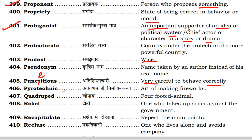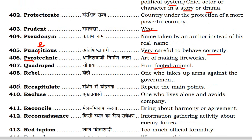Next is pyrotechnic — the art of making fireworks. Next is quadruped — a four-footed animal. Next is rebel — one who takes up arms against the government.